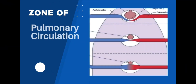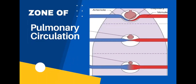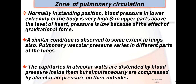Today's lecture is about zones of pulmonary circulation. Normally, in standing position, blood pressure in the lower extremity of the body is very high, and in the upper part above the level of the heart, pressure is low because of the effect of gravitational force. A similar condition is observed to some extent in the lungs. The capillaries in the alveolar wall are distended by blood pressure inside them but simultaneously are compressed by alveolar air pressure on their outsides.